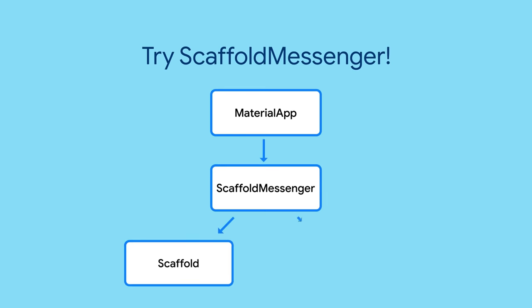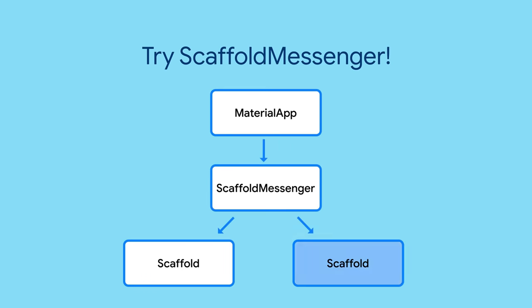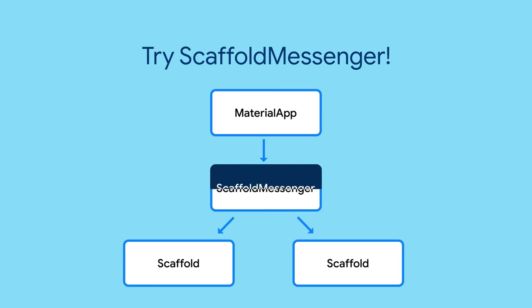ScaffoldMessenger works by sitting above all of your scaffolds as an inherited widget. Anytime a new scaffold is initialized, it looks up the tree for an ancestor ScaffoldMessenger and subscribes to snack bar events.